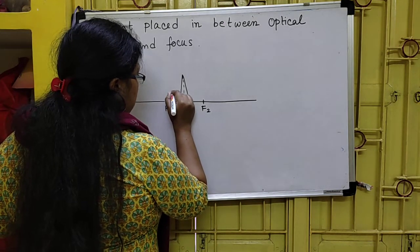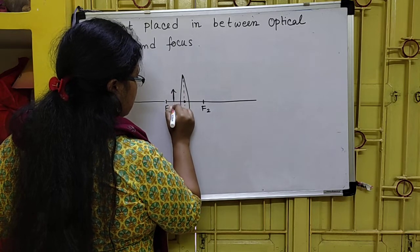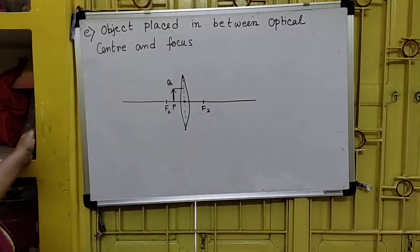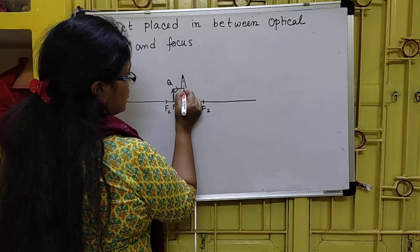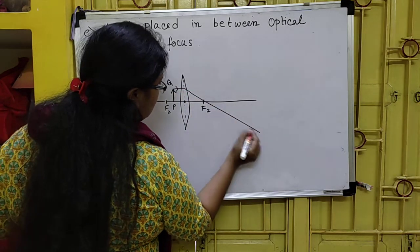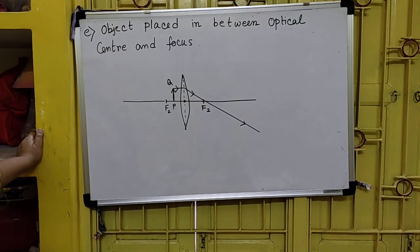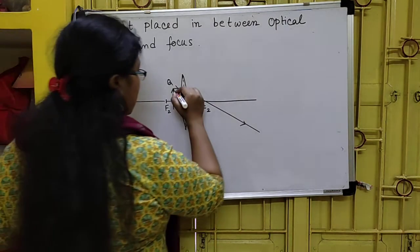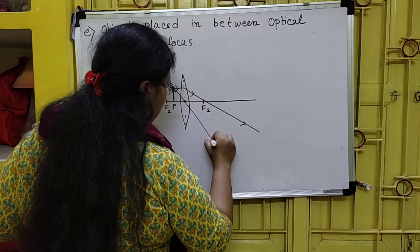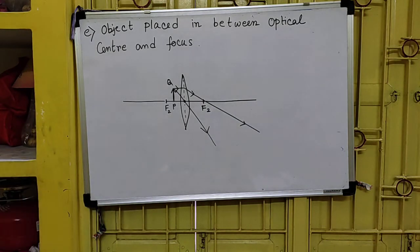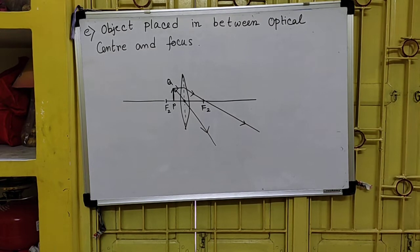Suppose this is my object PQ kept over here. First of all, a parallel beam of ray falls over here. So if a parallel beam of ray falls over here, after refraction it passes through the next focus. Now if another ray passes through the optical center of the lens, as you can see, these two rays can never ever meet on the opposite side of the lens.